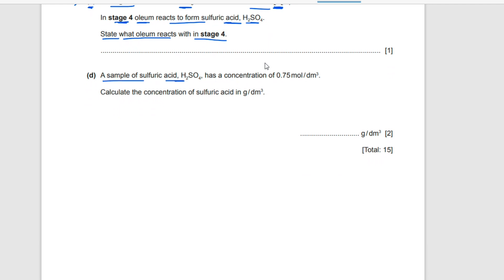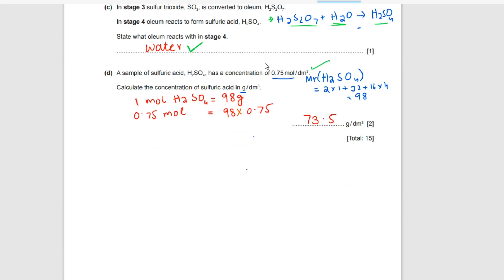A sample of sulfuric acid has a concentration of 0.75 mol/dm³. Calculate the concentration of sulfuric acid in g/dm³. The molar mass (Mr) of sulfuric acid H₂SO₄ is: 2×1 + 32 + 16×4 = 98 g/mol. If one mole has 98 g, then 0.75 mol × 98 g/mol = 73.5 g/dm³.